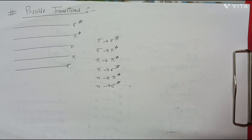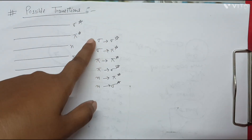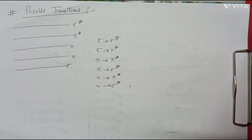However, all of these theoretically possible transitions are not practically possible. Which transitions are possible and which are not is governed by two selection rules, which we will discuss in the next video. So far, I hope everything is clear. That's it for this video — thank you so much for watching.